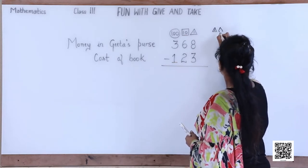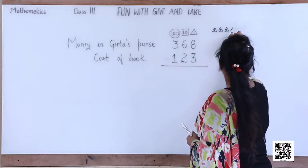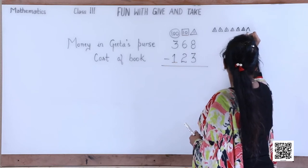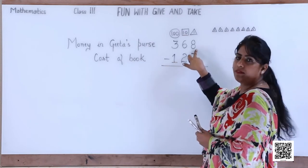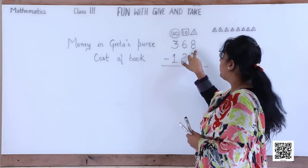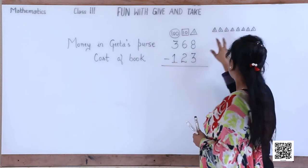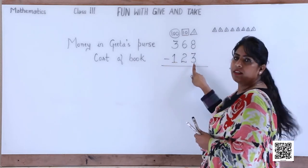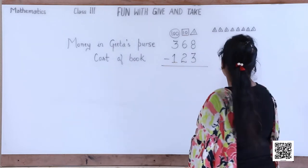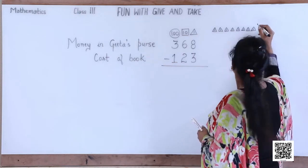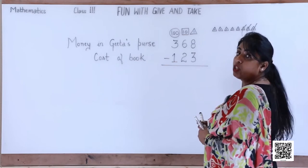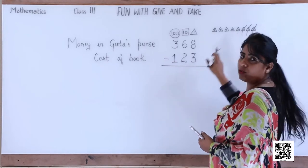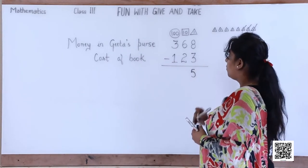We draw eight triangles: first, second, third, fourth, fifth, sixth, seventh and eighth — eight triangles denoting the ones place. Now what are we going to deduct? Three. So we cancel three triangles — one, two and three. How many triangles are left? Yes, five. So we write five in the ones place.